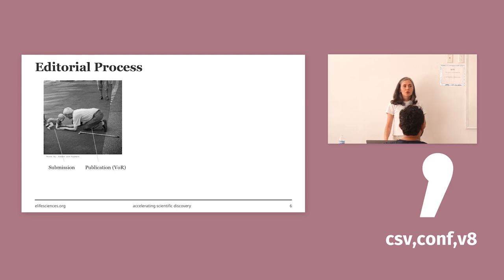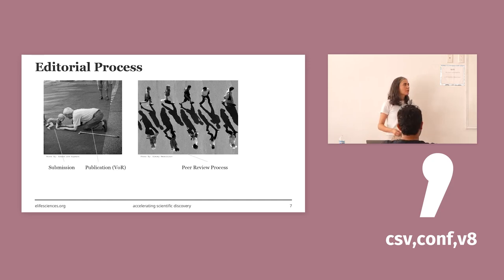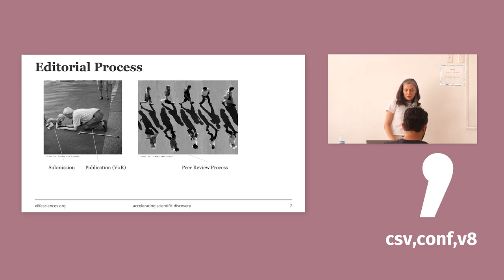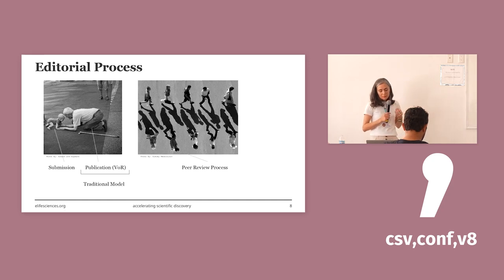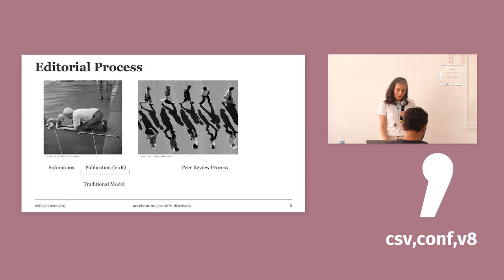Let's continue with what is an editorial process. In a basic definition, the editorial process is a journey of a paper from submission to publication. In this process, papers will undergo a peer review process, which is very important for establishing trust in science. And in a traditional model, the story behind this journey remains hidden — we only see the paper when it is published, and otherwise all this process remains hidden, as if it never happened.